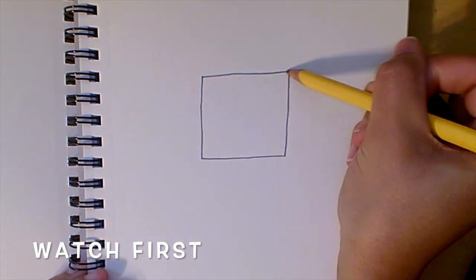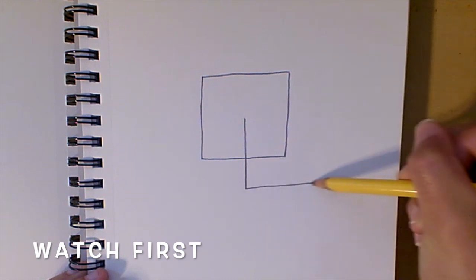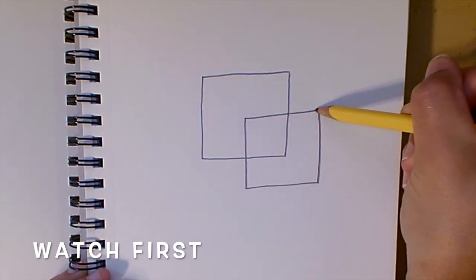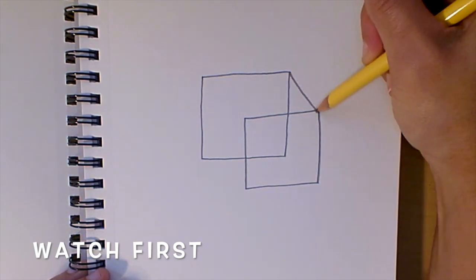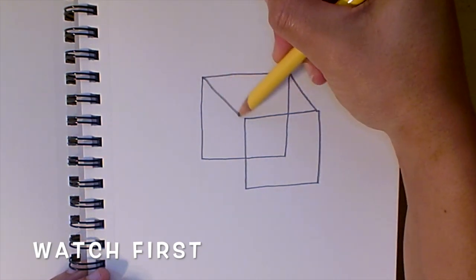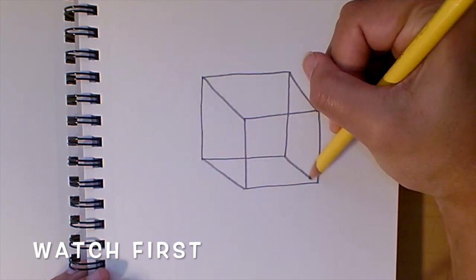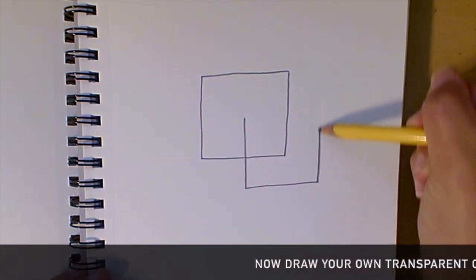Transparent cube. Make sure you start in the center of your square to make another square that's the same size. Lastly, connect the closest corners together. Now, draw your own transparent cube.